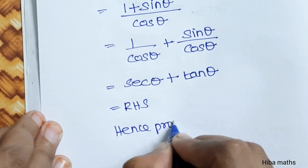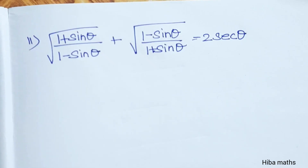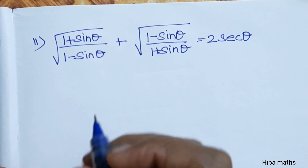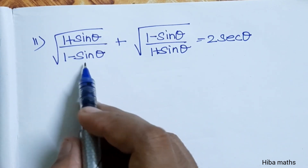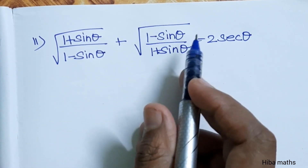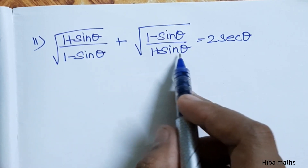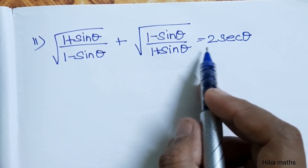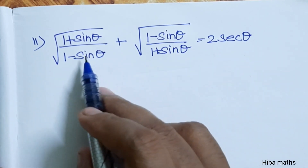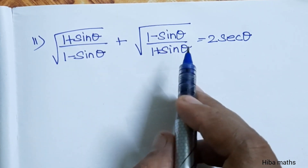Now let's move to the second sub-question. The second identity to prove is: square root of (1 plus sin theta) divided by (1 minus sin theta) plus square root of (1 minus sin theta) divided by (1 plus sin theta) equals 2 secant theta.